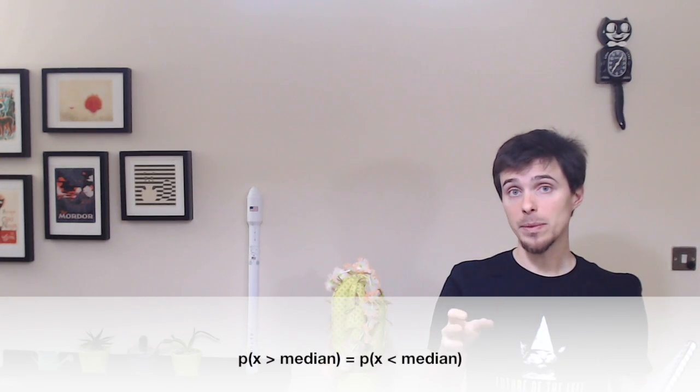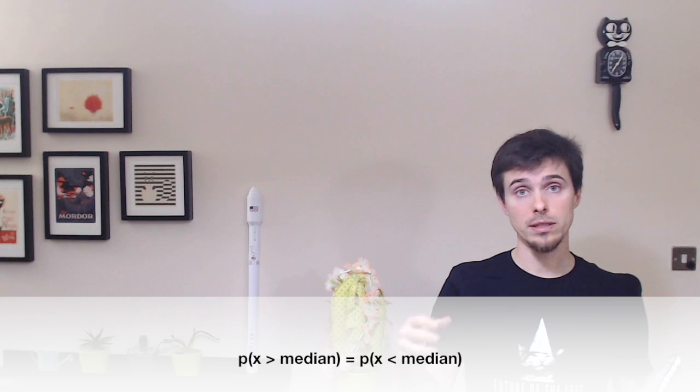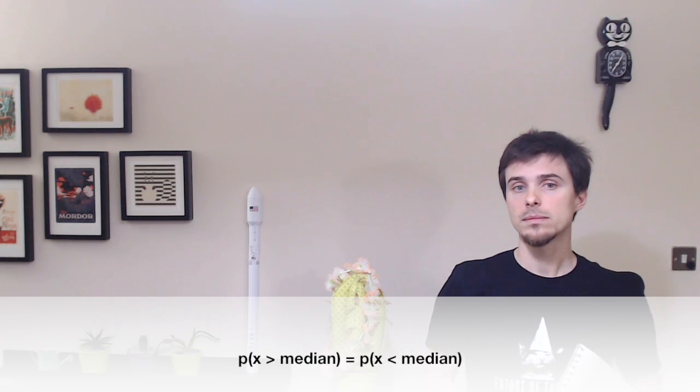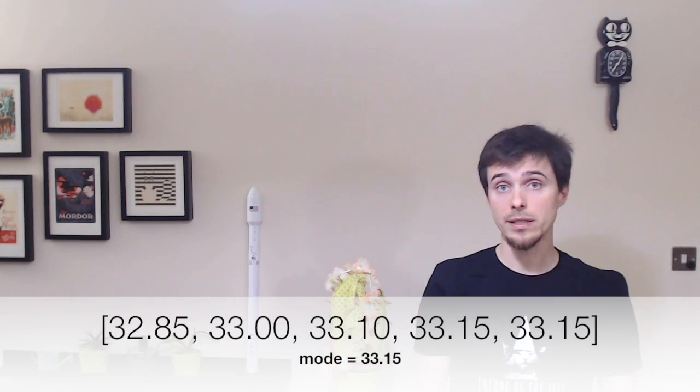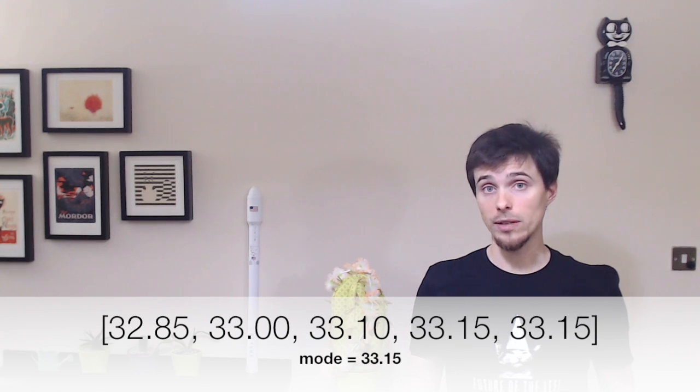If we had six samples, the median would have been the mean of the two central values. The rigorous definition of a median is the statistical value for which the probability of finding a value smaller than the median equals the probability of finding a value larger than the median. The mode is the value which occurs most often — in our case, the mode is 33.15, which appears twice. If more than one value occurs the same number of times, all those values are modes.